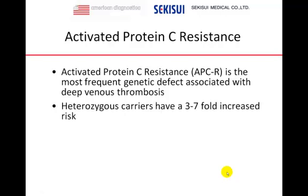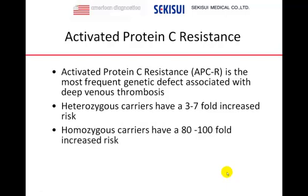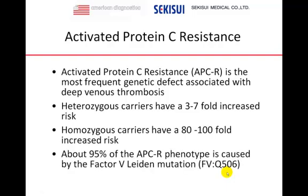Heterozygous carriers have a 3 to 7-fold increased risk. Homozygous carriers have an 80 to 100-fold increased risk. About 95% of the APCR phenotype is caused by the so-called Factor V Leiden mutation, also abbreviated as Factor V Q506.